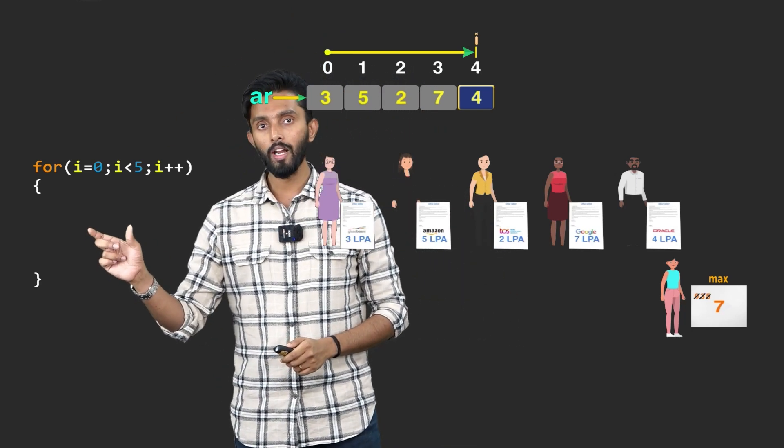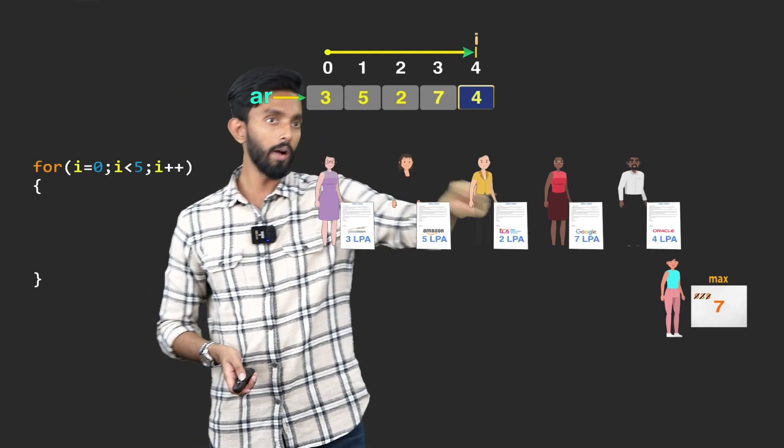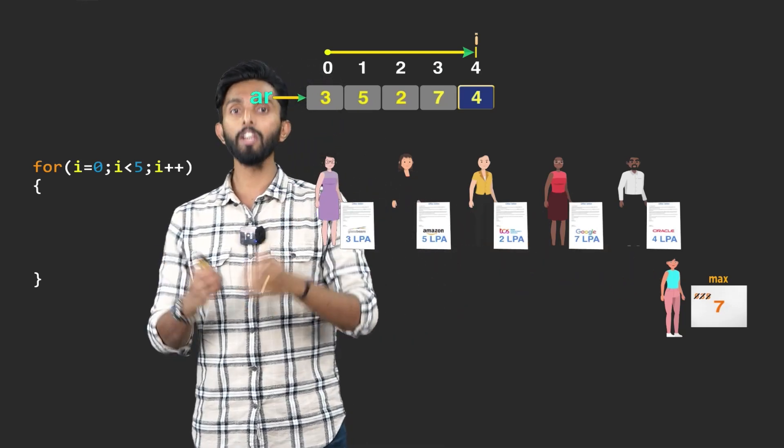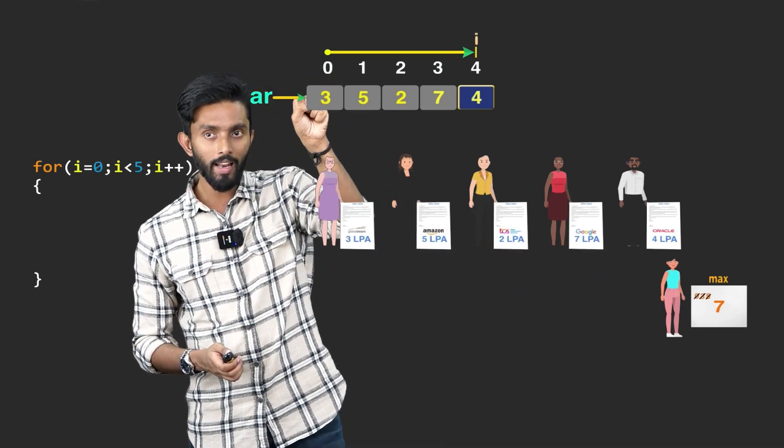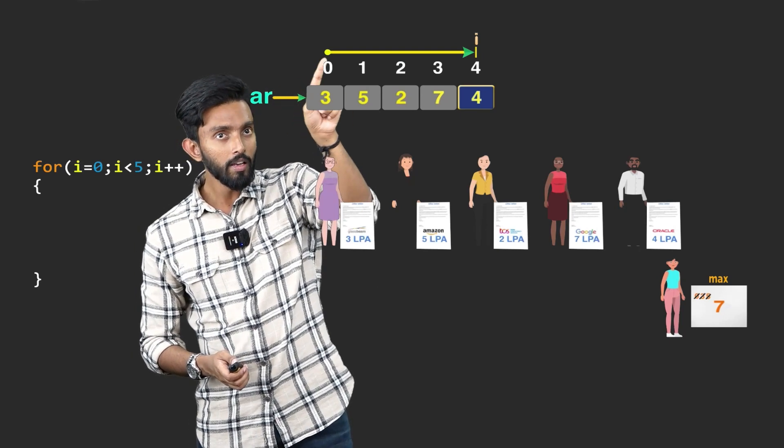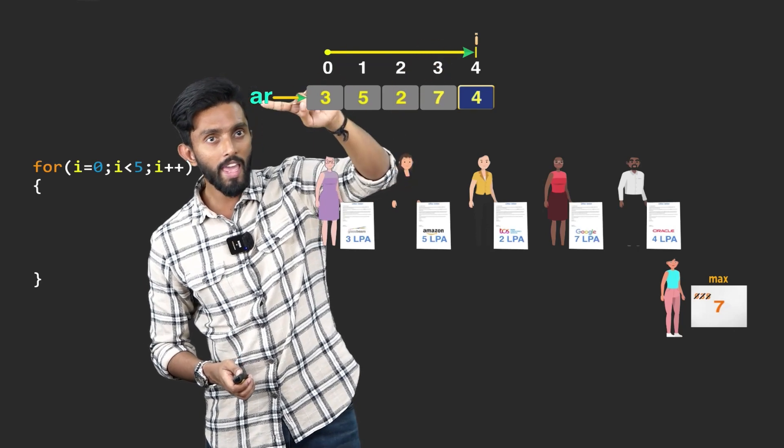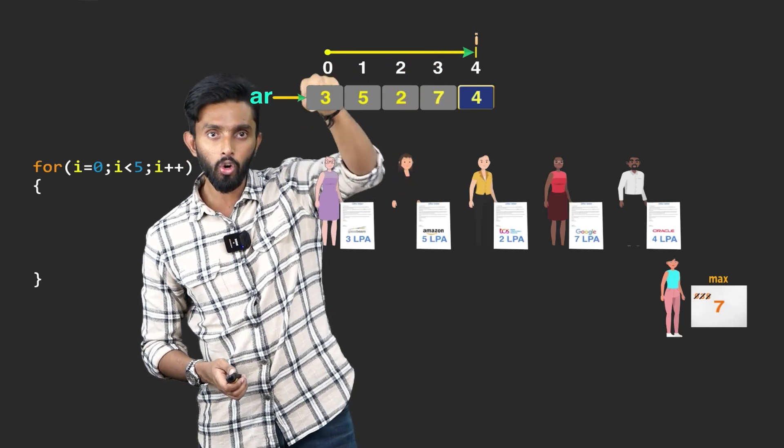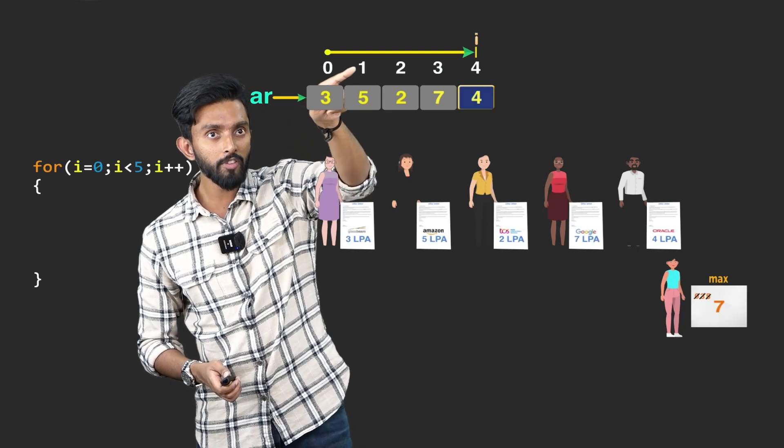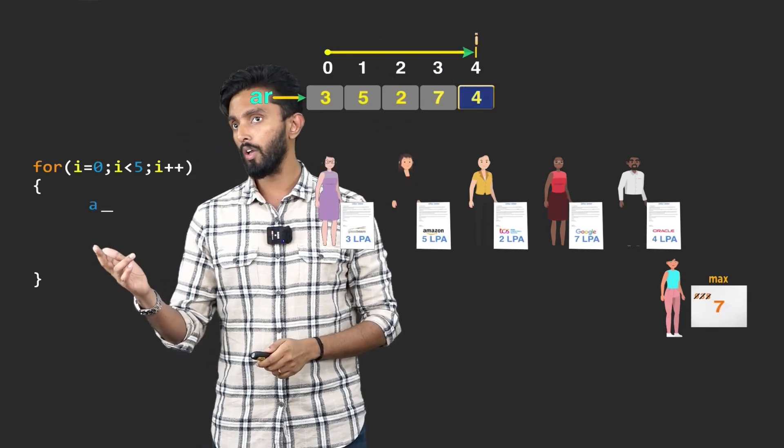Can I say less than equal to 4? Yes, certainly. But I will say less than 5. And now, what should I do inside this? What I should do inside this is, I should take every value inside this array, compare it with max. Check if it is greater. Now, how do you access an element inside this array? AR is the name of the array. 0 is the index. Index is only taken care of by i. So, AR of i means, if i is 0, it will be 0. AR of i means, if i is 1, it will be AR of 1. AR of 2. AR of 3. AR of 4.